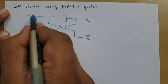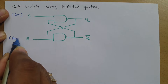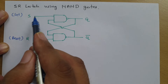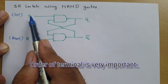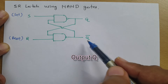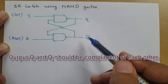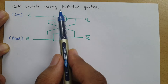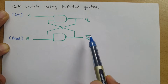Now you can see this is the S-terminal, referred to as the set terminal, and this is the R-terminal, referred to as the reset terminal. Note the order of terminals S and R: for SR Latch using NOR gate the order is R and S, but for SR Latch using NAND gate the order is S and R. Also, output Q and Q-bar should always be complemented to each other. If Q and Q-bar are both equal, that is an invalid output. These two things we need to keep in mind.